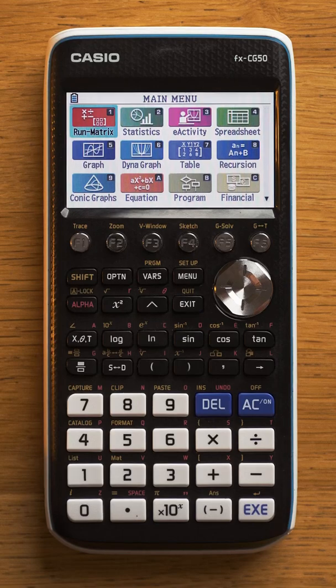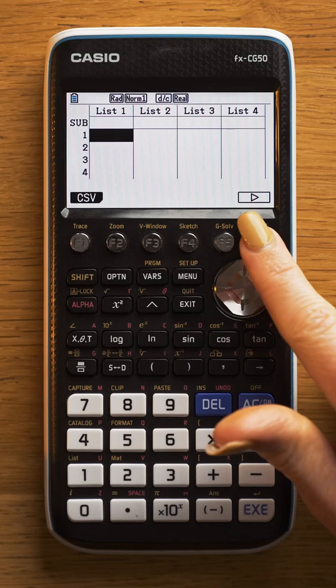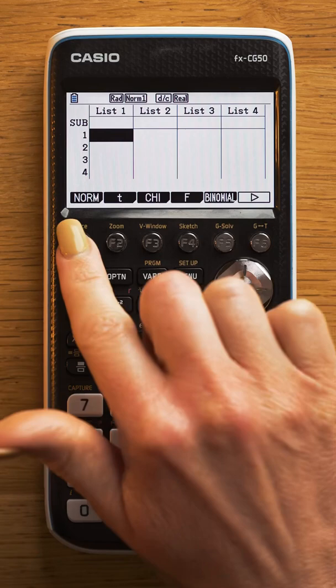If you want to look at the normal distribution on your calculator, you're going to click in here to statistics, you're going to click here into distribution, and the first option F1 is the normal distribution.